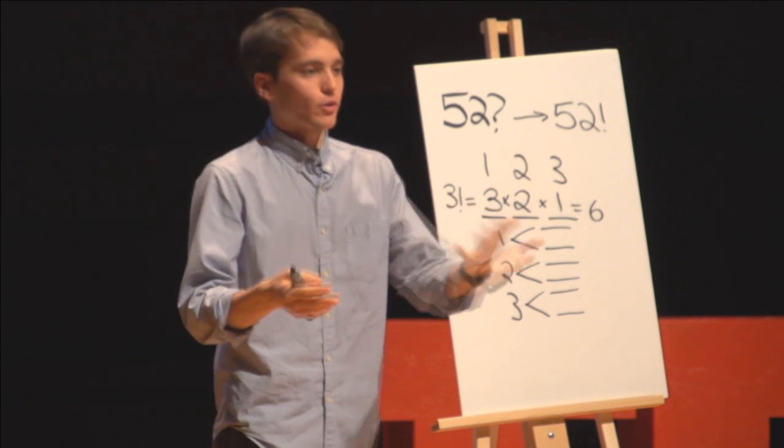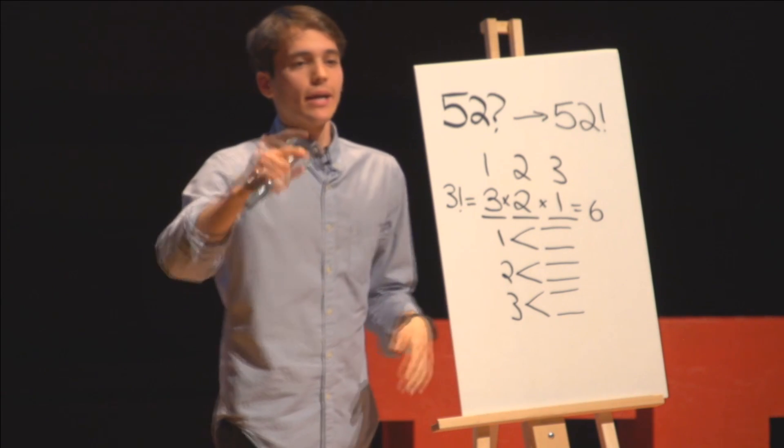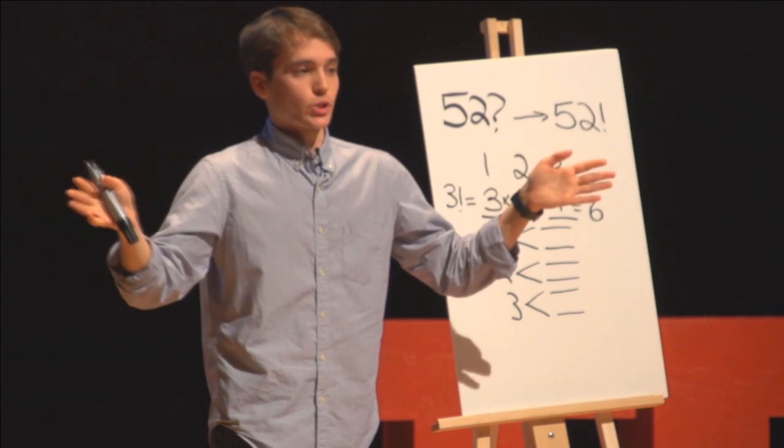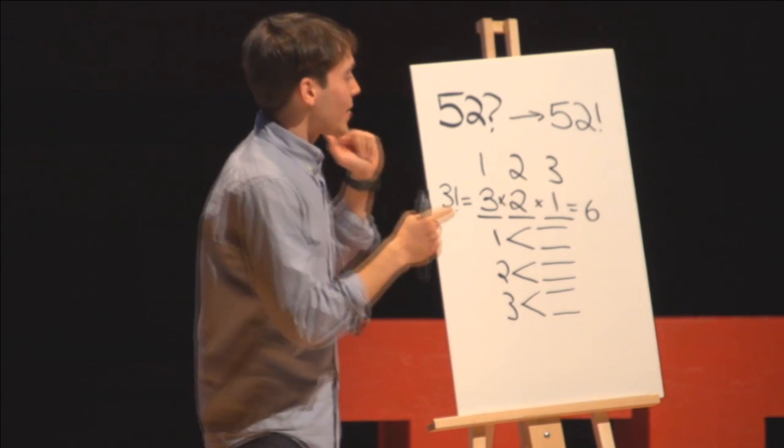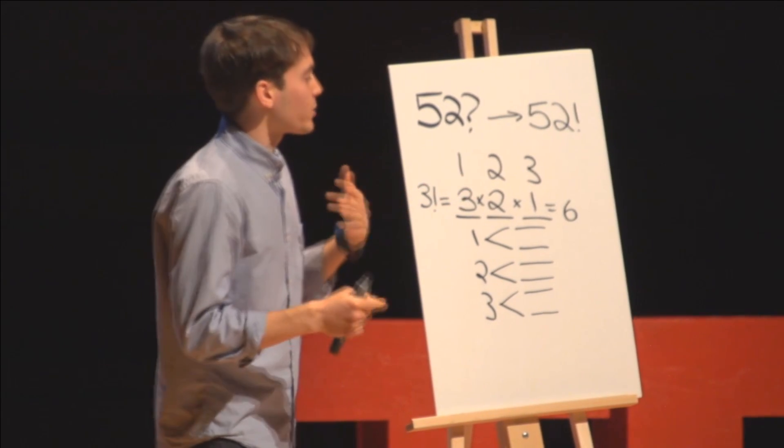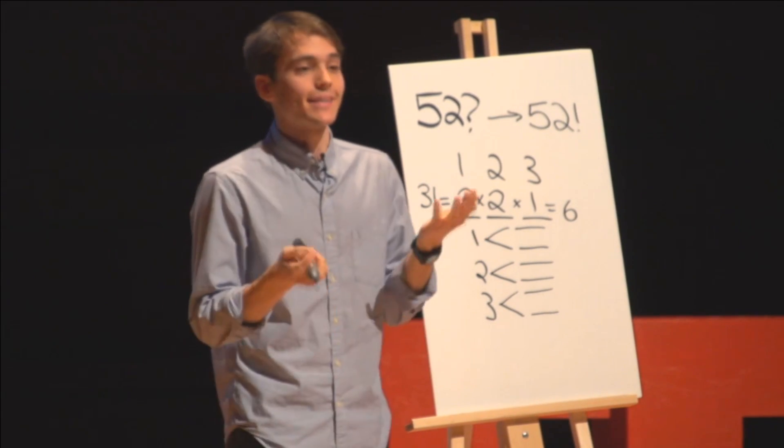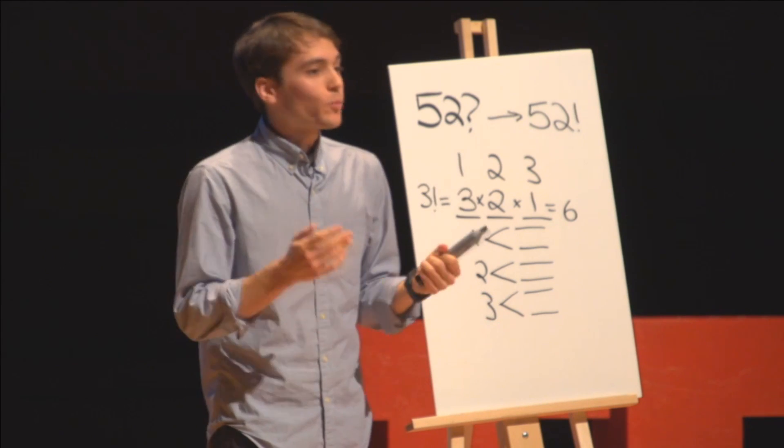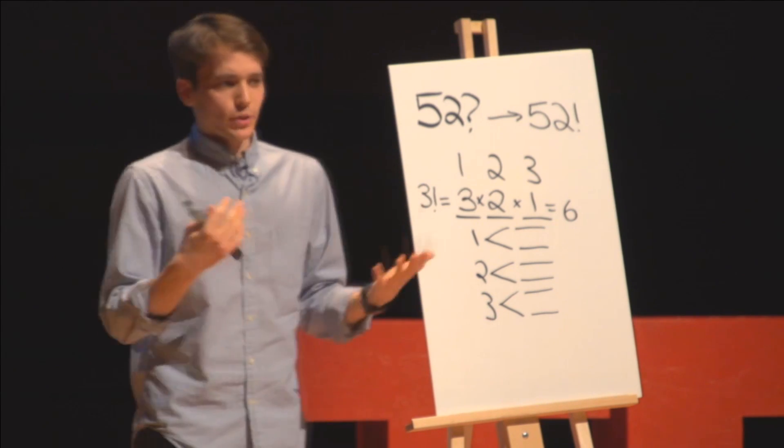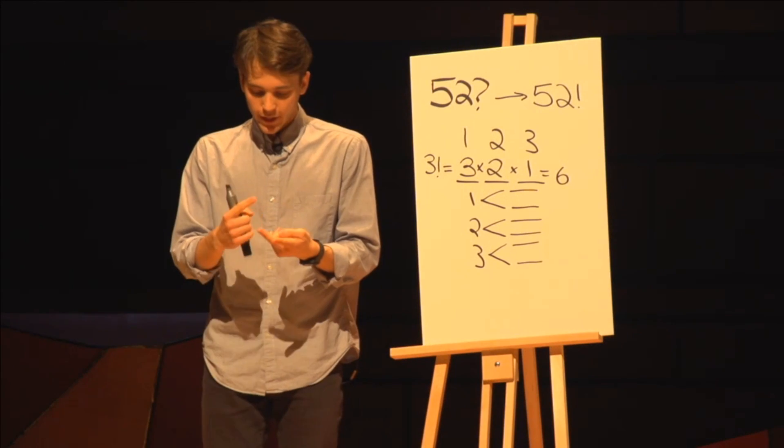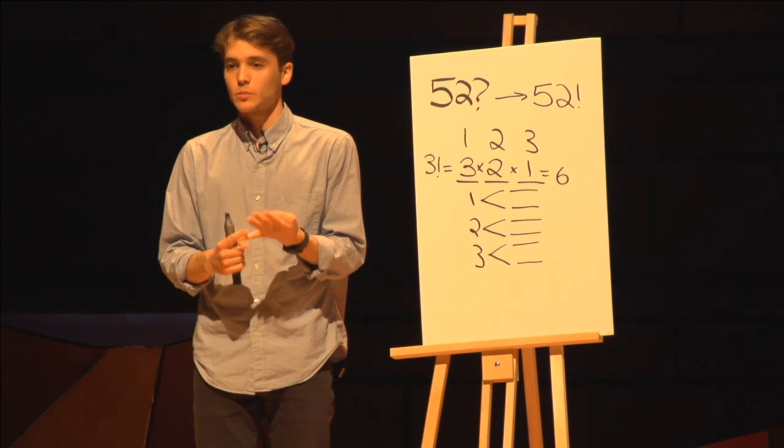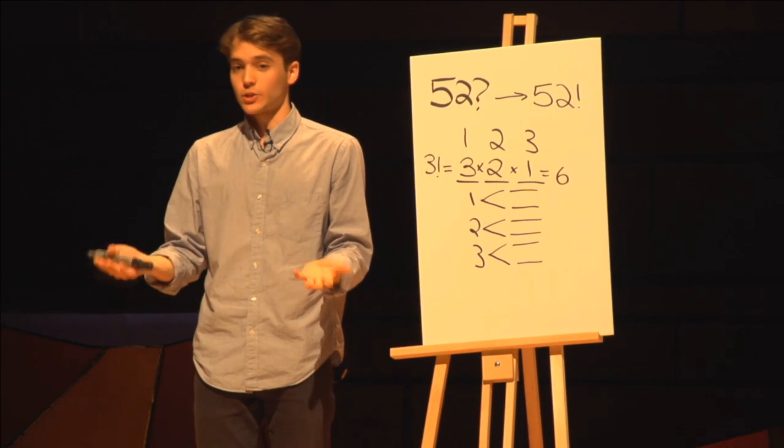I really urge you to try this on your phone as soon as you get out of here, not right now, or with the nearest emergency calculator. And you'll find that 52 factorial is equal to 8 times 10 to the 67th power. That's 8 followed by 67 zeros. And just to put that number into perspective, that's a trillion, trillion, trillion, million times more than the number of sand grains on Earth.